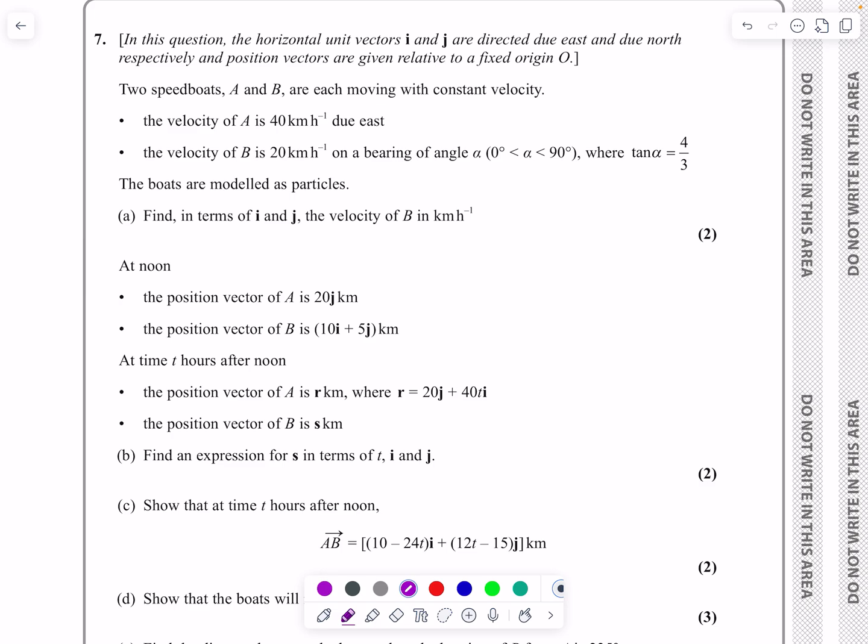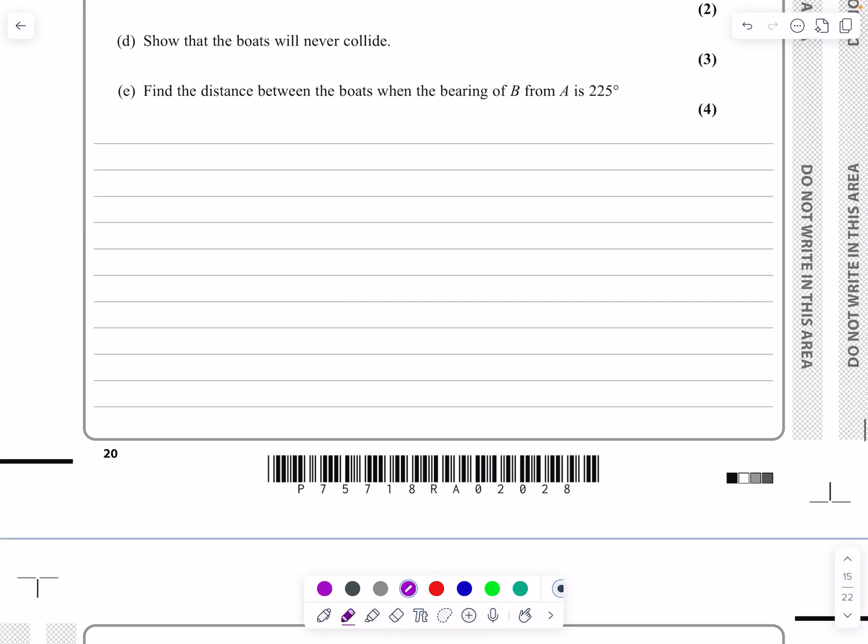Let's read through it because there's quite a bit to get through. In this question, we've got two speedboats, A and B, which are moving with constant velocity. A is going 40 kilometres an hour due east. B is going 20 kilometres an hour at a bearing angle alpha, where alpha is between 0 and 90 degrees, and tan alpha equals 4 over 3. Both boats are modelled as particles. Part A is relatively straightforward - find, in terms of I and J, the velocity of B. I won't worry about all the rest of it.